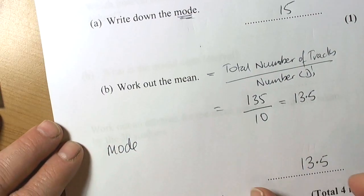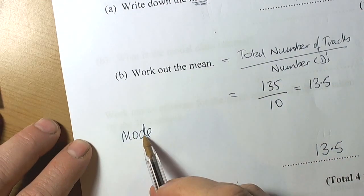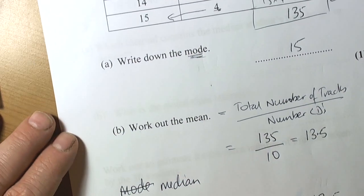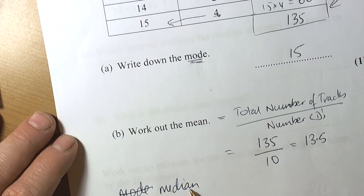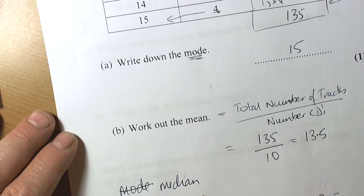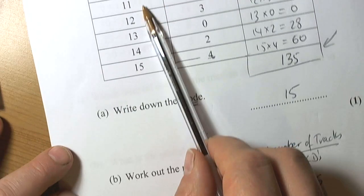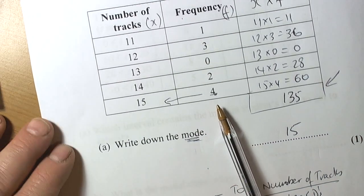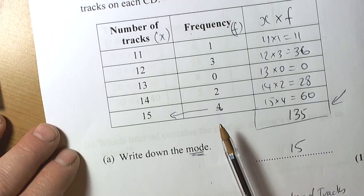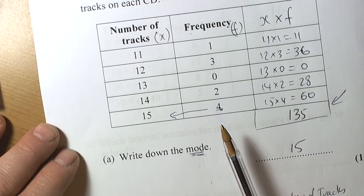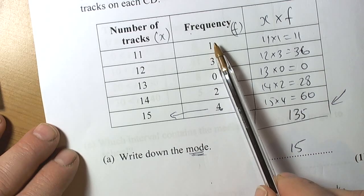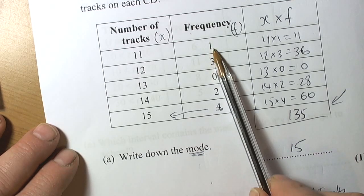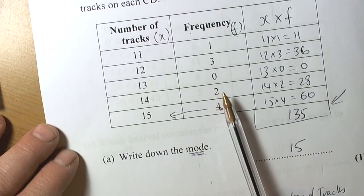They could also ask you to find the median number of tracks. We need to think about where the median CD is. The table's already in size order: 11 tracks, 12 tracks, and so forth. We've got 10 CDs, so adding one gives us 11, half of that is 5.5, meaning we want to be between the fifth and sixth CD.